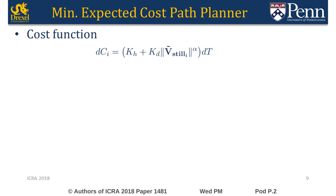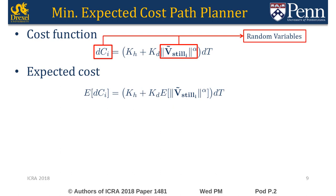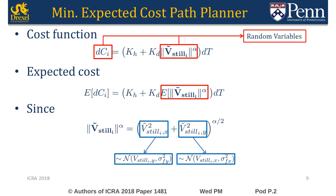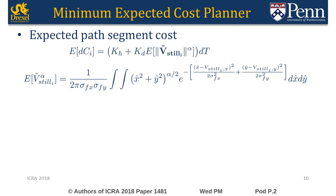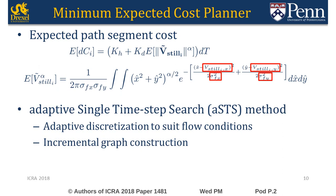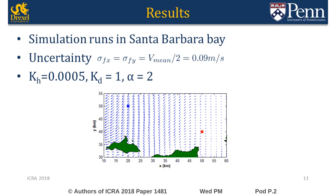Now let's consider the minimum expected cost path planner. Due to uncertainties in the flow, the cost of a path segment is a random variable. The expected cost of a path segment can be computed using the expected value of the thrust vector. The components of the thrust vector can be shown to be normally distributed independent random variables. The expected cost can be computed using the joint PDF of these components, and only depends on the thrust required in a deterministic setting and on the uncertainty level. Therefore, the expected cost can be used in a graph search method to compute minimum expected cost paths.